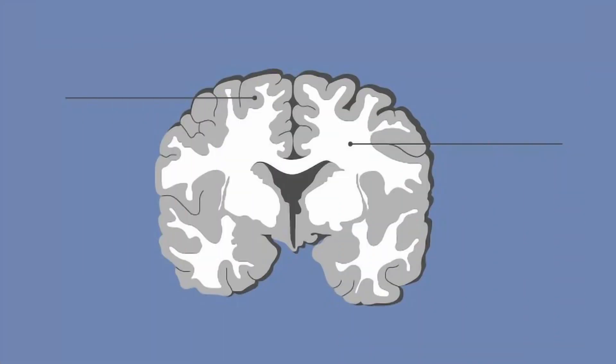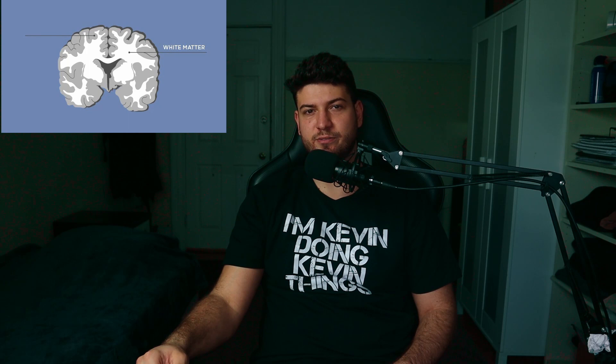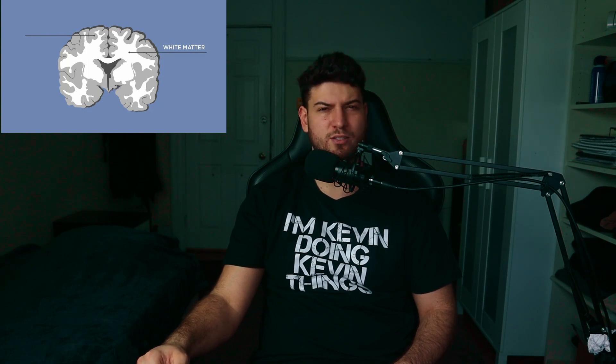We can distinguish white matter and gray matter in the central nervous system. White matter is made of axons or tracts, and it's called white because the axons are surrounded by myelin — a white fatty substance. The function of white matter is to connect different parts of the brain. You can think about it as a kind of wiring in your brain.